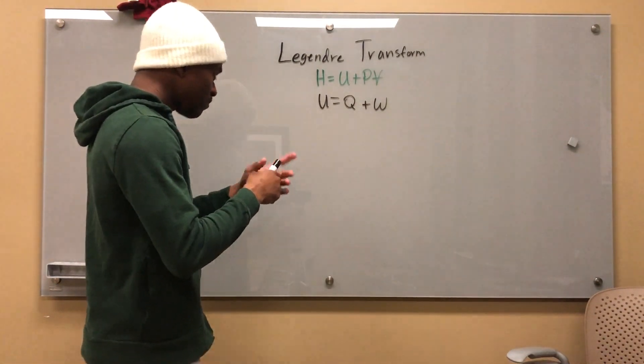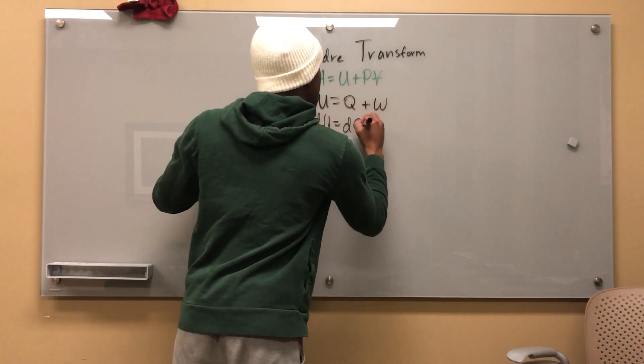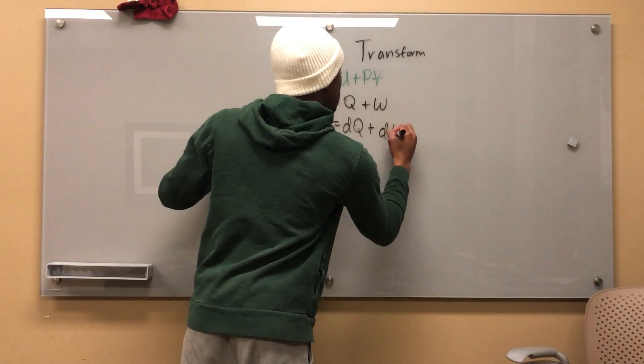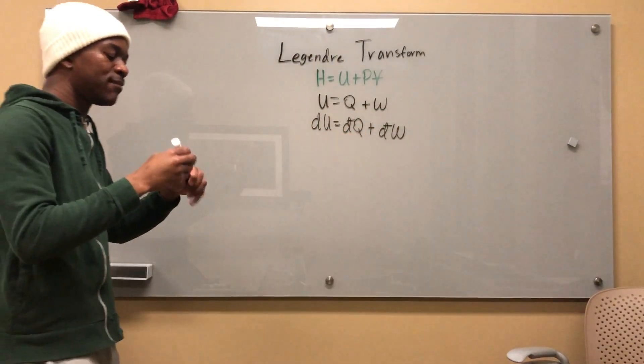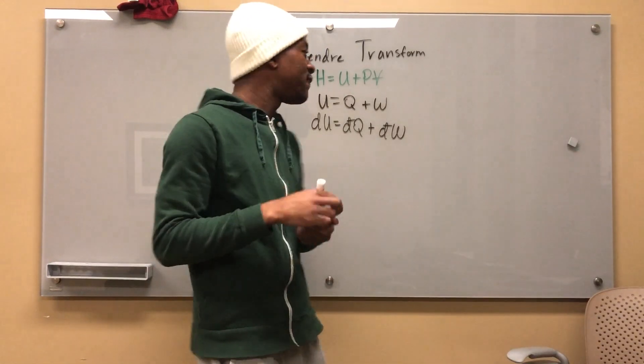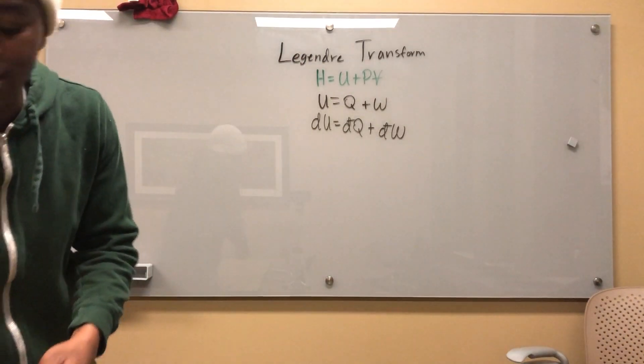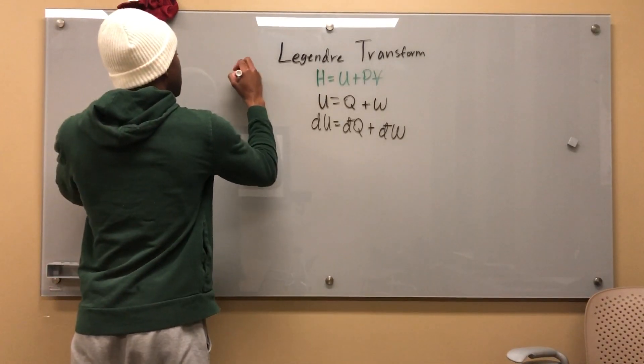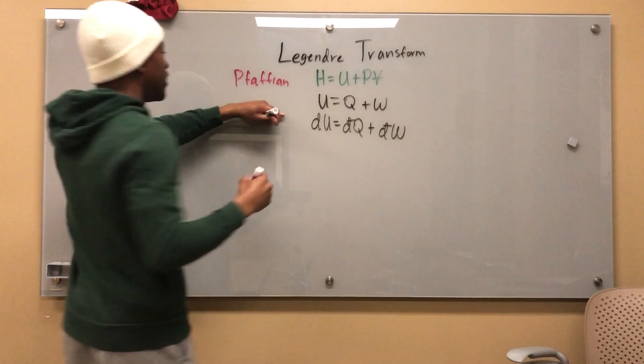Now, I can say that dU equals dQ plus dW. And I'm going to go ahead and put these bars on this Q and this W just to imply that they're Pfaffians. Now, Pfaffians spelled like this means that... This is how you spell Pfaffian, if I'm correct. Pfaffian.